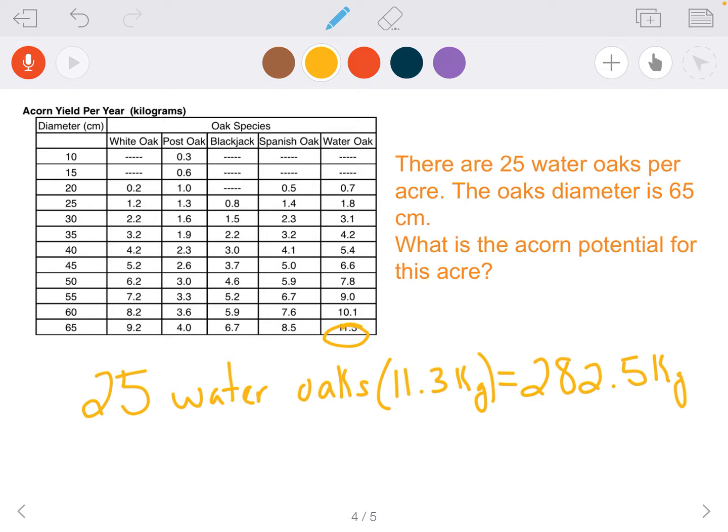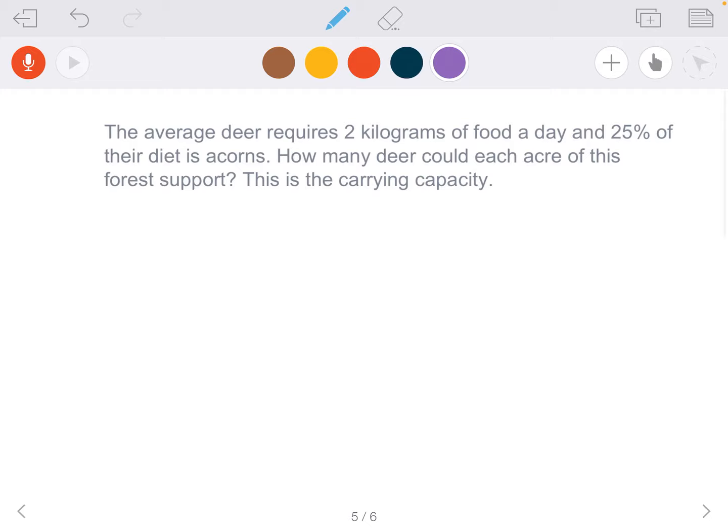That means we have 282.5 kilograms in our 25-acre forest. In a year's time, 25 water oak trees will produce 282.5 kilograms worth of acorns each year. Now we need to remember this number for our next calculation.